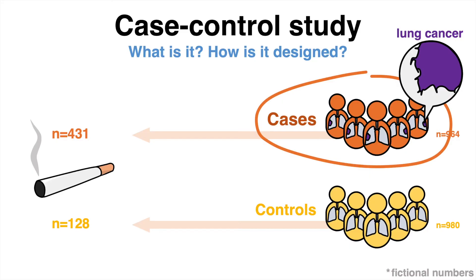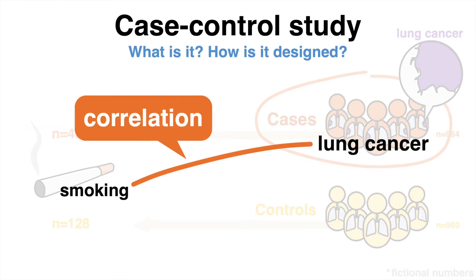Hypothetically, if the evaluation demonstrates that people in the case group were smoking significantly more frequently and there were more non-smokers in the control group, there might be an association of smoking and cancer. At this point, this would just be considered a correlation and no causation yet.